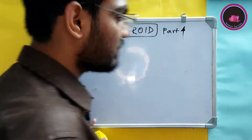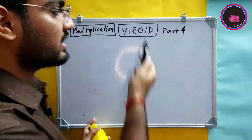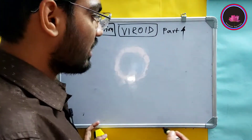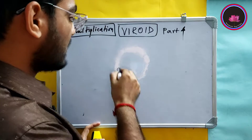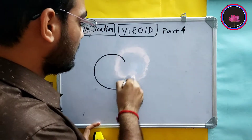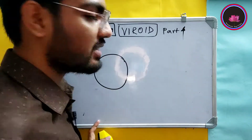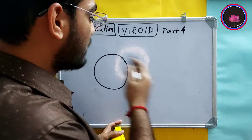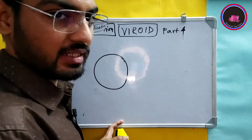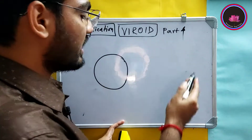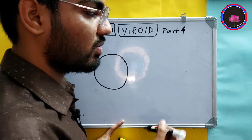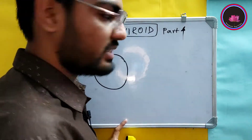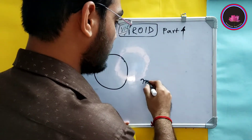In this video I am going to talk about the multiplication of the viroid. Whenever we discuss the virus and viroid, they actually multiply and replicate by one unique mechanism called the rolling circle mechanism.